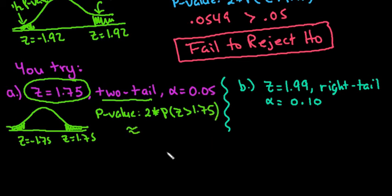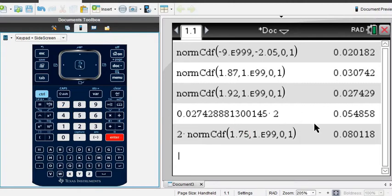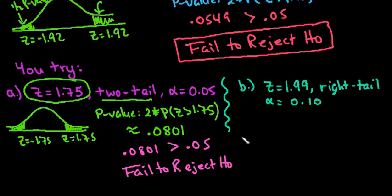For this one, the p-value is 2 times the probability that z is greater than 1.75. We plug that into our calculator. I'll do 2 times, and you can go up and copy again or go through the menu. I'll change this to 1.75 and hit enter. We can see it's 0.0801 approximately. Comparing p-values, 0.0801 compared to 0.05 is greater than, so you would fail to reject H₀.